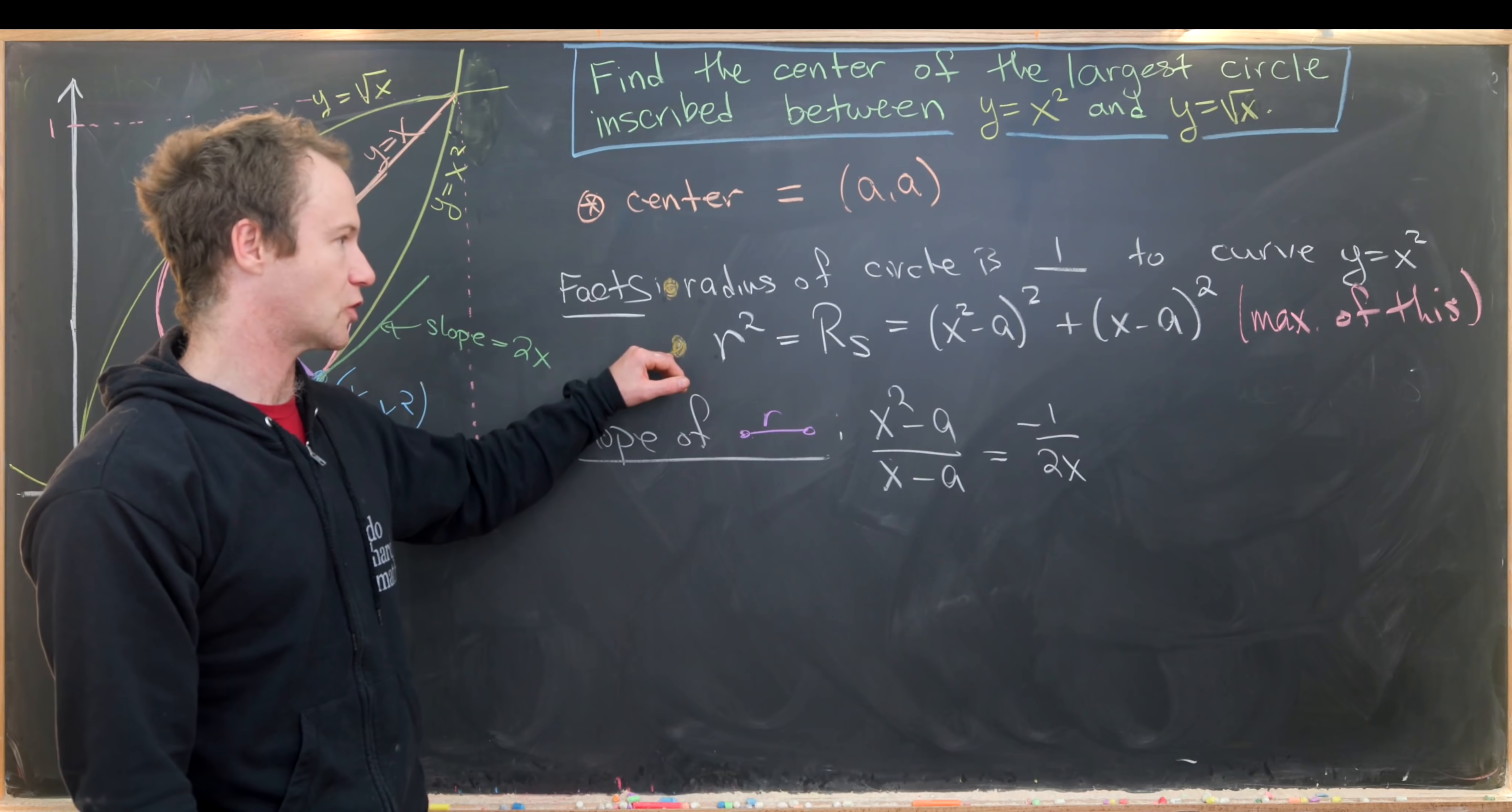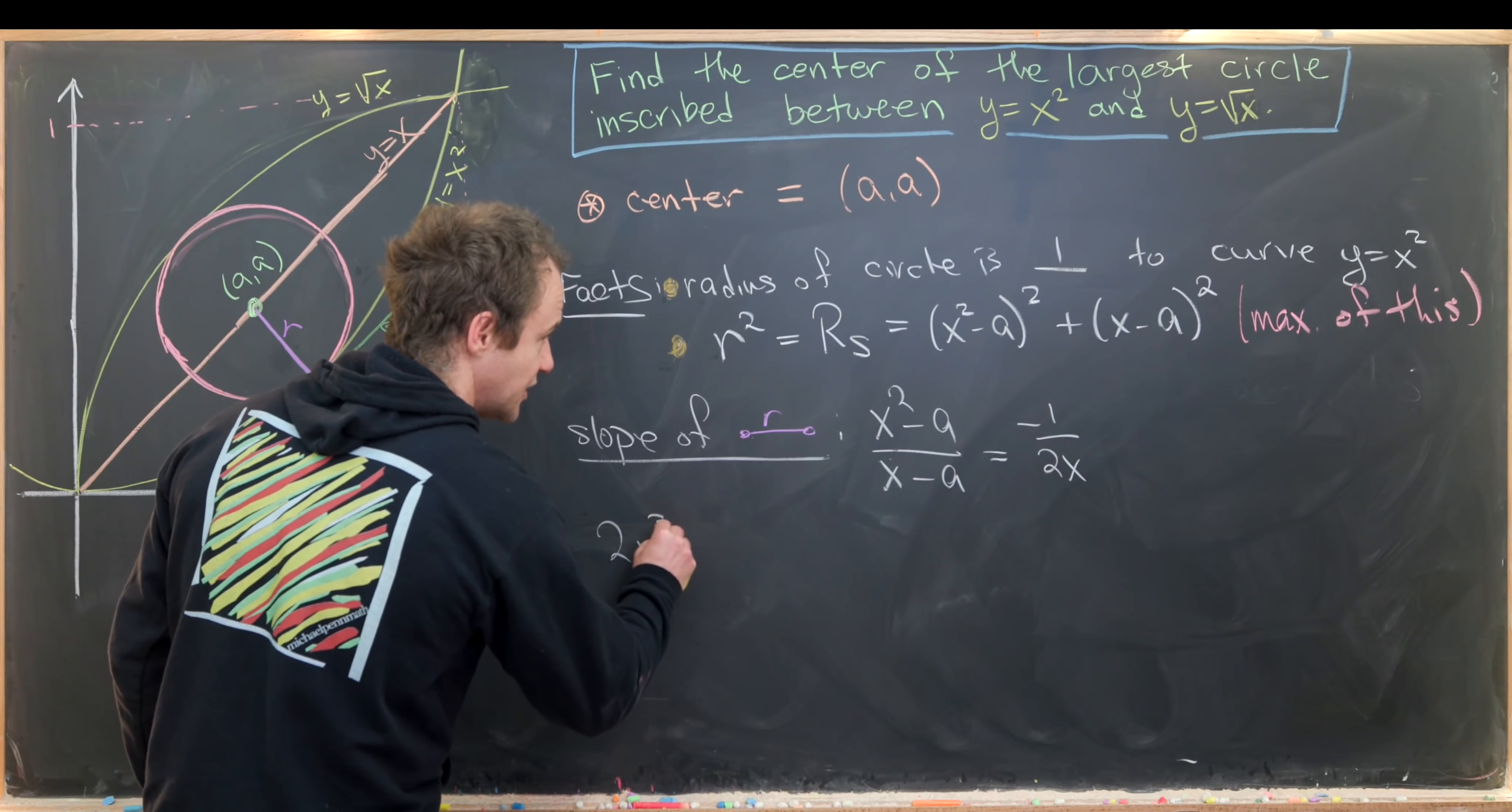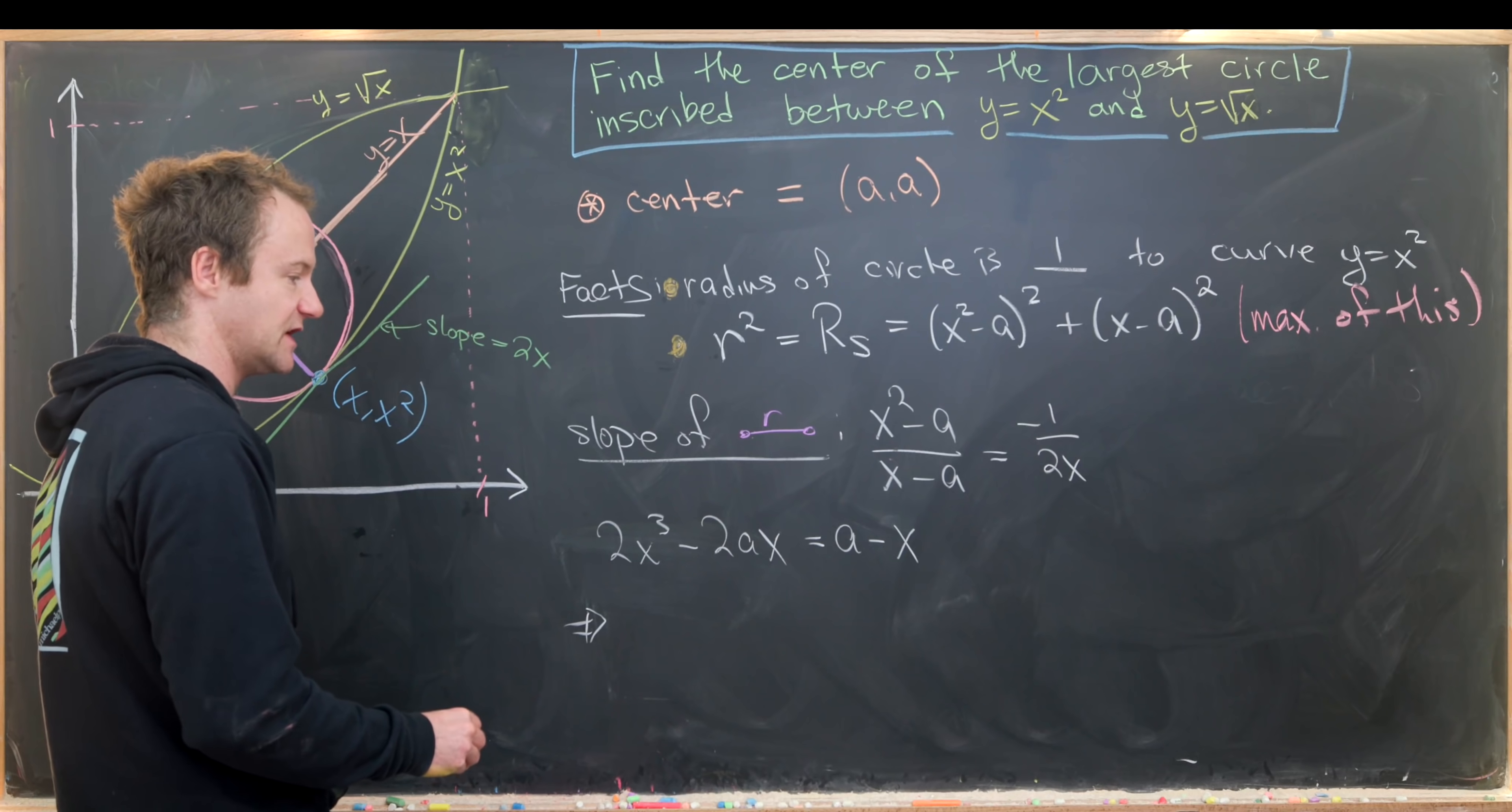Now we're in a good spot because we've got our goal function and an equation relating our two variables x and a. Let's solve this for a and plug it into this equation. Cross multiplying gives us 2x cubed minus 2ax equals a minus x. Now we'll group everything with an a on one side.